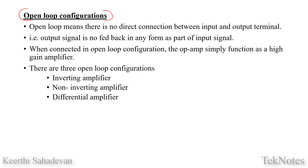What is the meaning of open loop? Open loop means there is no direct connection between input and output terminal. In a particular circuit, between input terminal and output terminal, there is no direct connection, which is known as open loop. A closed loop, by contrast, does have that connection.